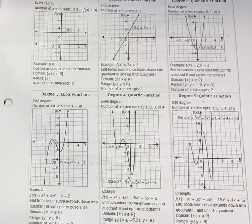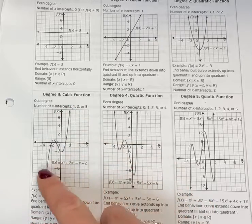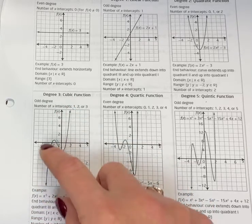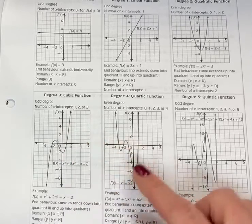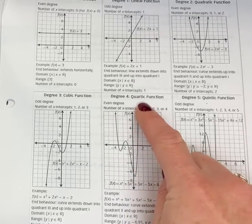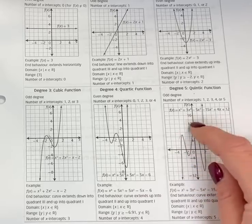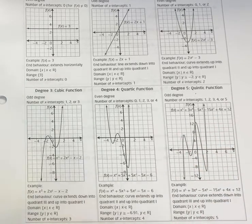If we have degree three, it changes directions here and here, so we say it changes directions twice. So it's always n minus one, n being the degree. Here, this changes directions one, two, three times—that's degree four. Degree five is going to be n minus one, so one, two, three, four—it changes directions four times. That's one of the other things that we talk about.